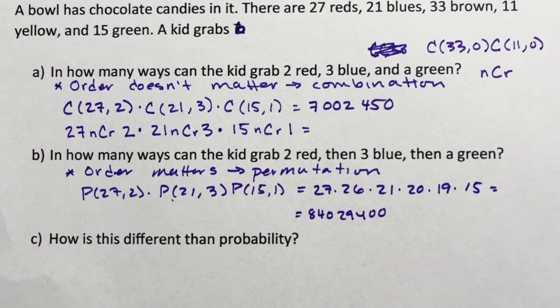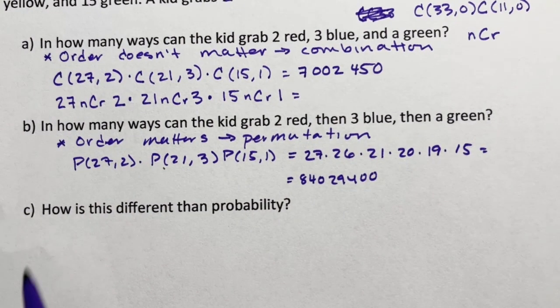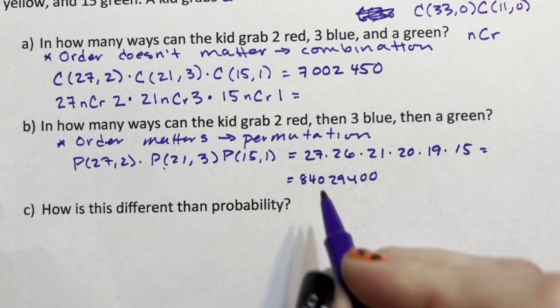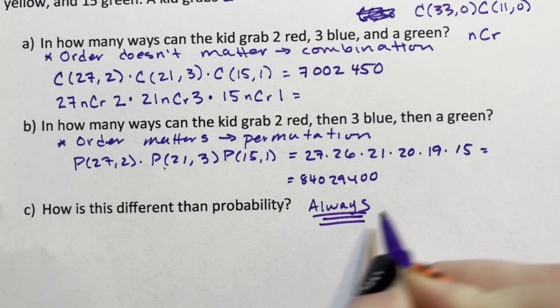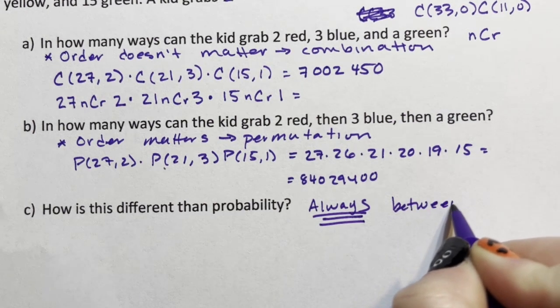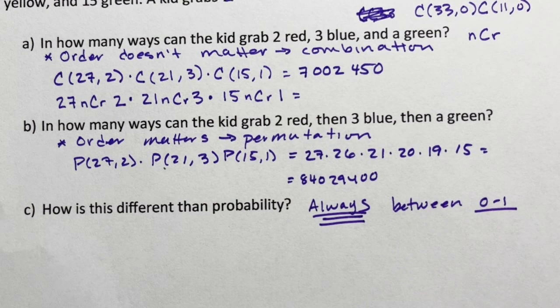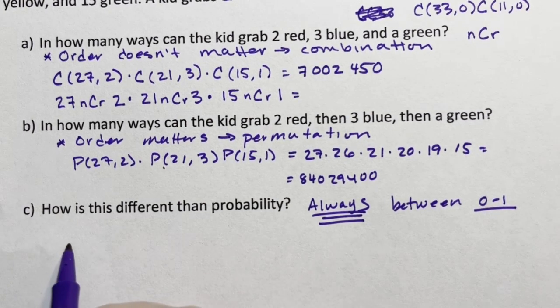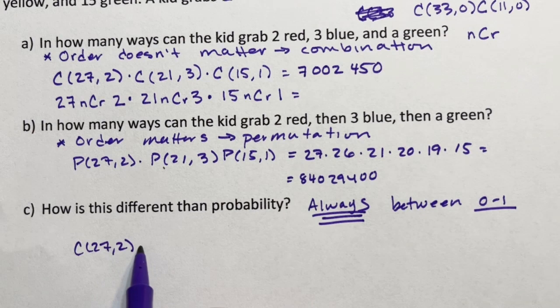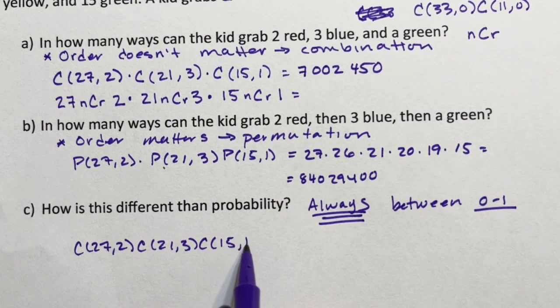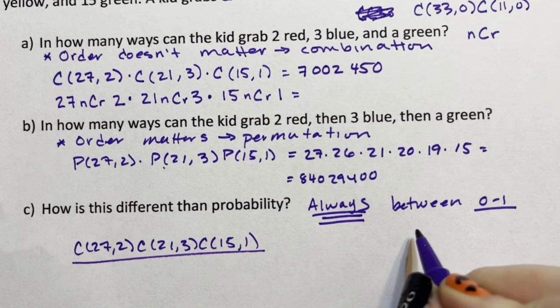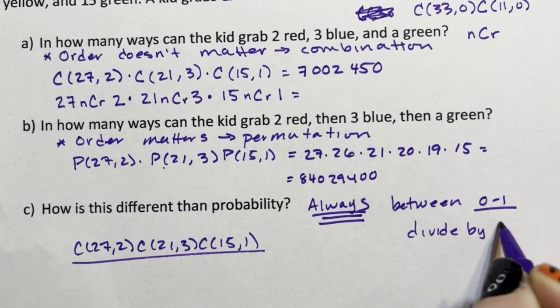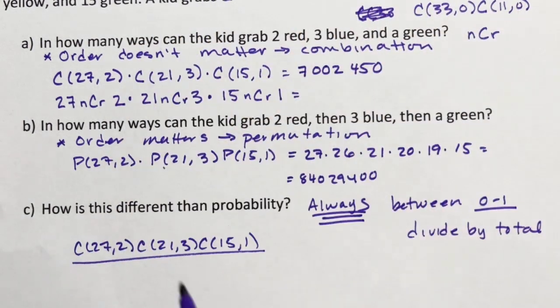Then the last question I have is how is this different than probability? Probability, this isn't how many ways. Probability is always between zero and one. If you find probability as 1.1 you've done something wrong. It is literally between zero and one. If it's bigger than one you are incorrect. You would take these answers and it's always all combination or all permutation. Probability doesn't mix the two together.